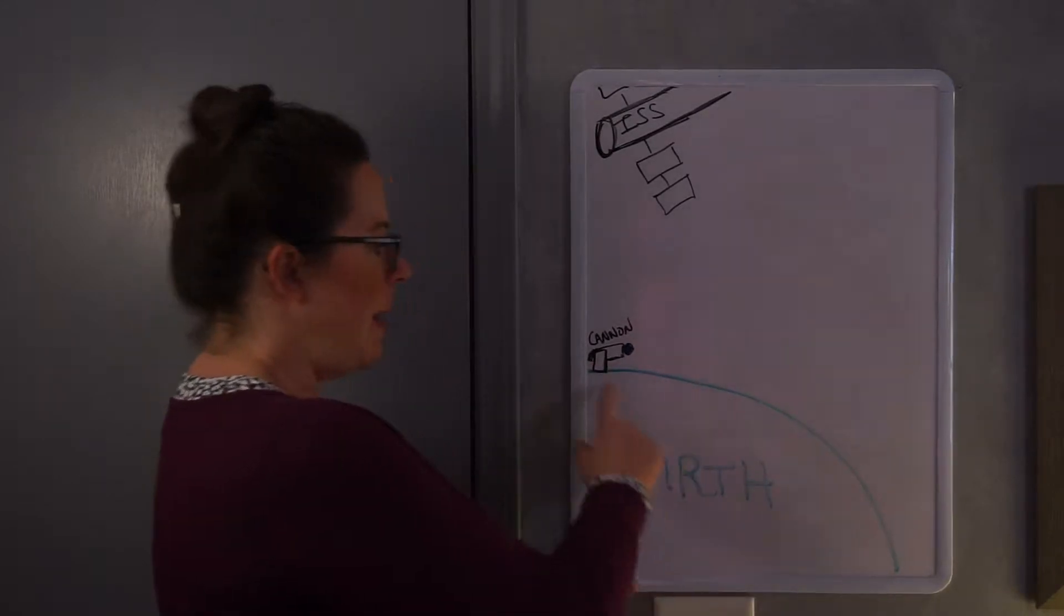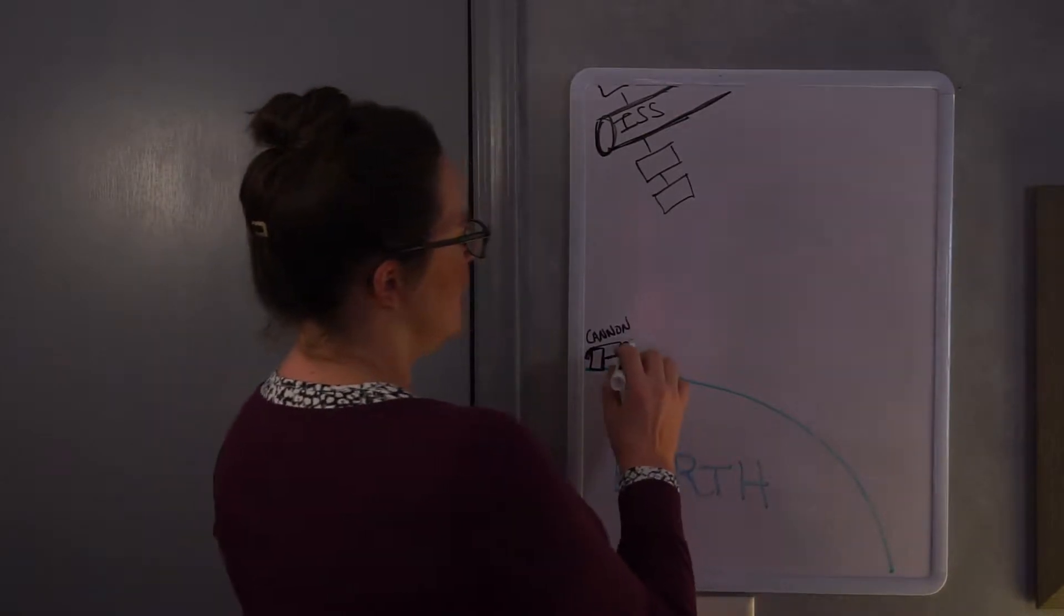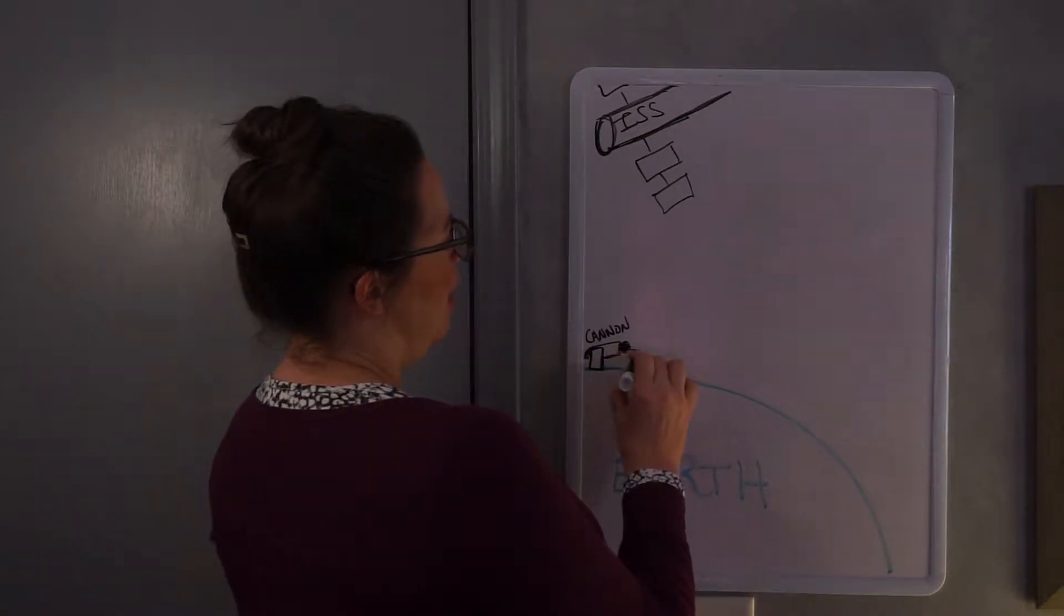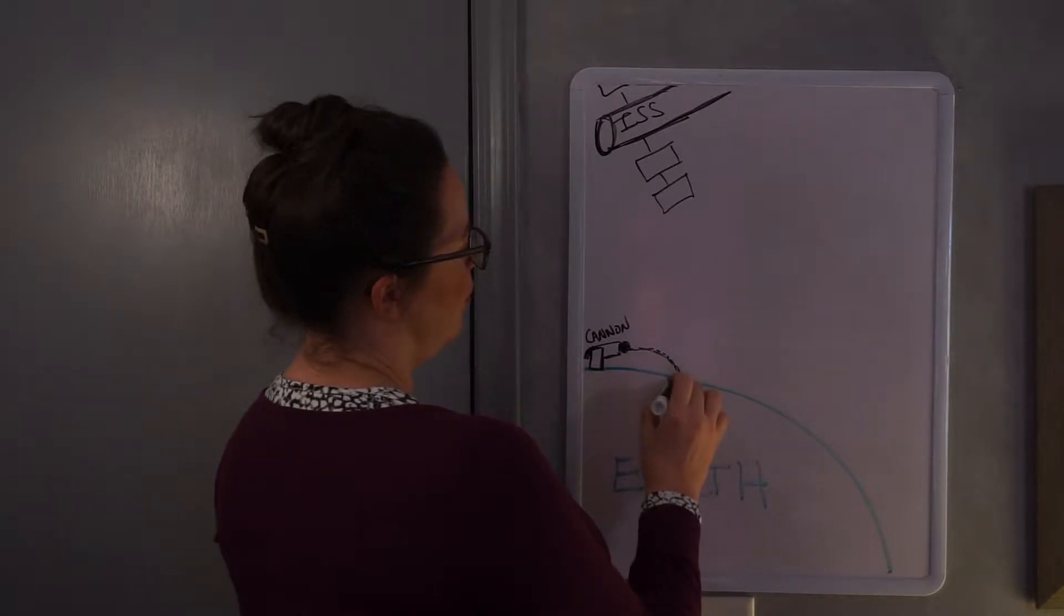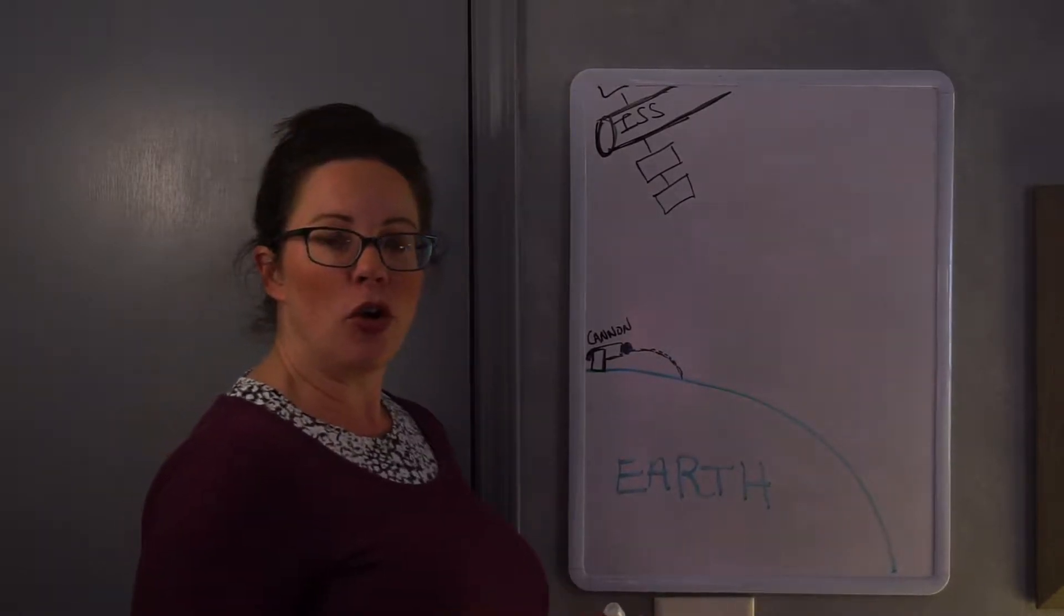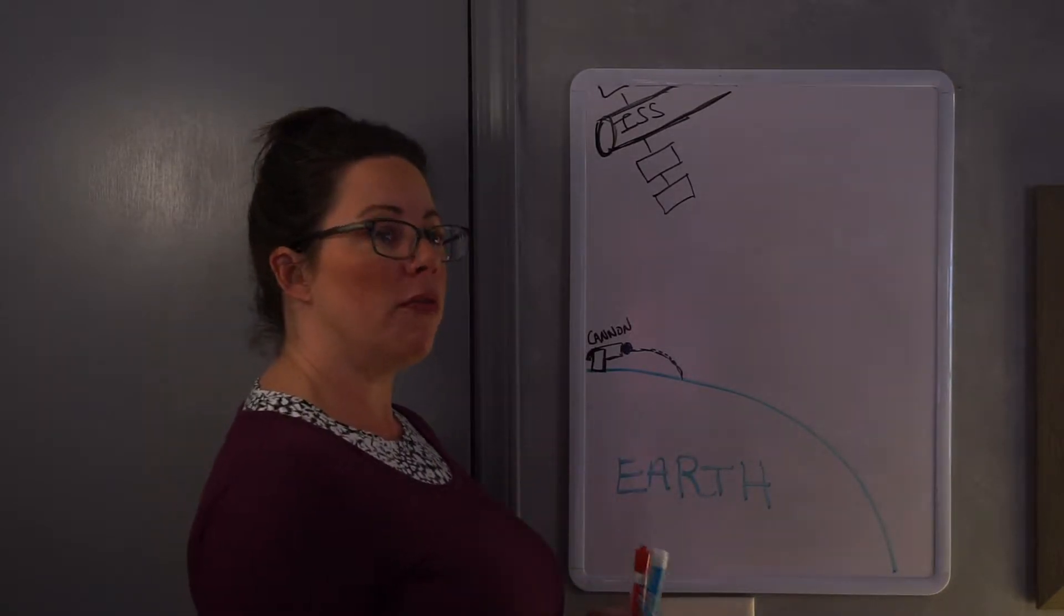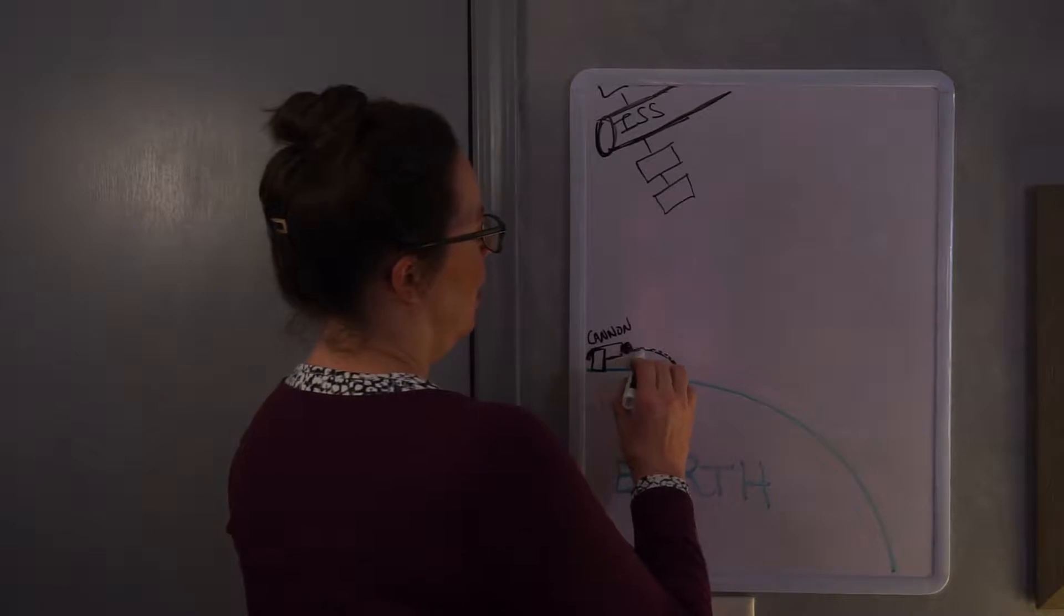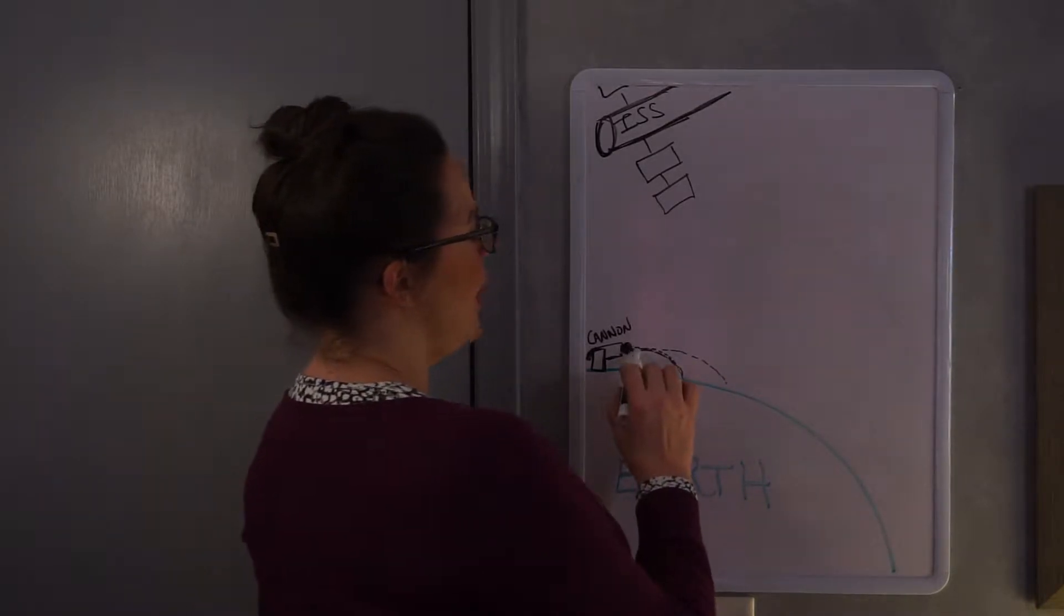So I want to look at the surface of the earth and I want to make a cannon that shoots a cannonball. I'm going to shoot that cannonball out and we've discussed this last semester how the cannonball if you shoot it out is going to have a little curved path to it, a little curved trajectory projectile path.